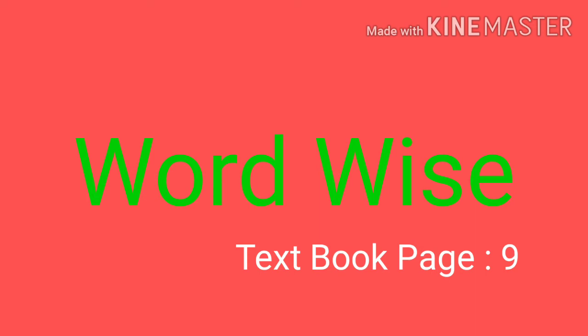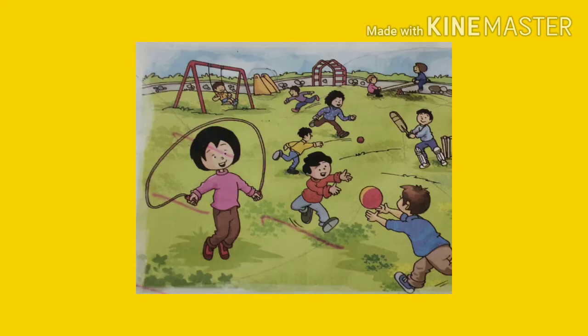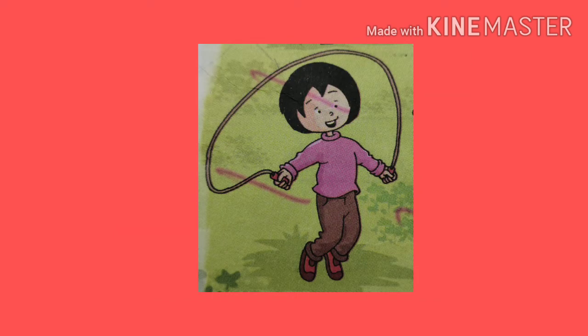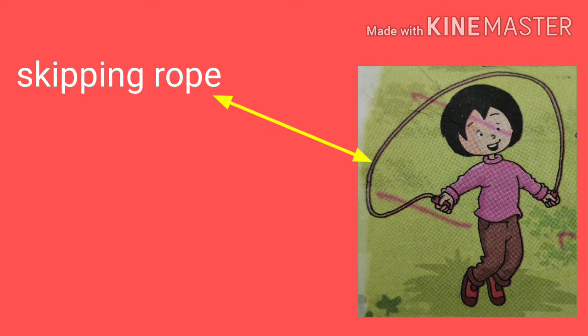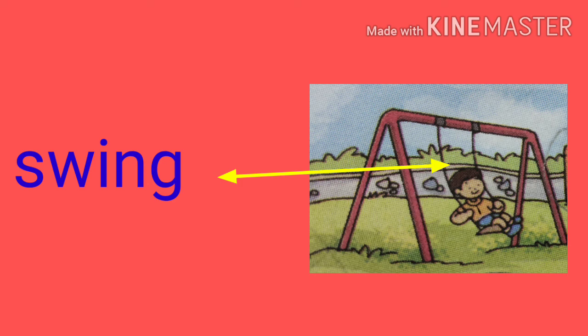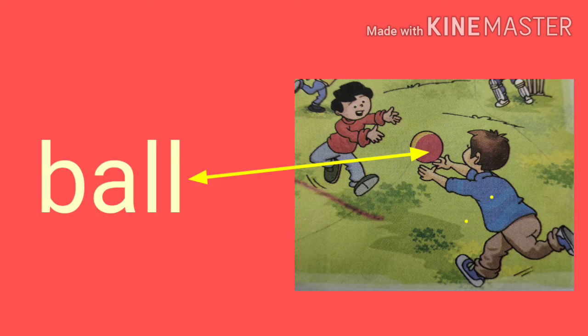Now, let us do the word wise exercise in textbook page number 9. This is a playground. The children are having so much fun. Now, let us match the words with the pictures. Here, the girl is skipping — match the word skipping rope with the picture. In this picture, the girl is swinging — match the word swing with the picture. In this picture, two boys are playing with a ball — match the word ball with the picture.